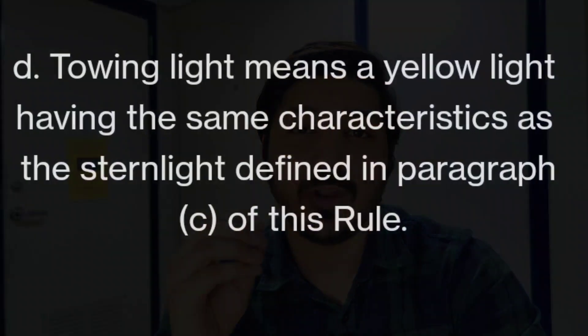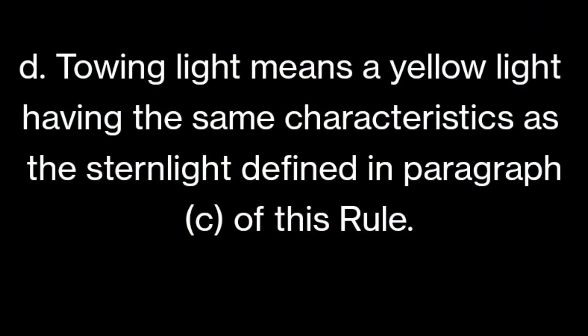Part D is about the towing light. A towing light means a yellow light having the same characteristics as the stern light defined in paragraph C of this rule. So the towing light is identical to the stern light — same arc, same position — only the color is different: the stern light is white, and the towing light is yellow.